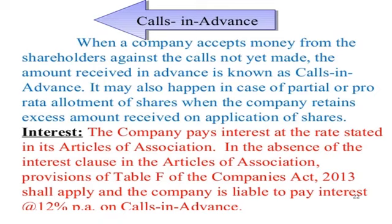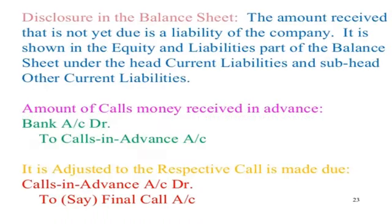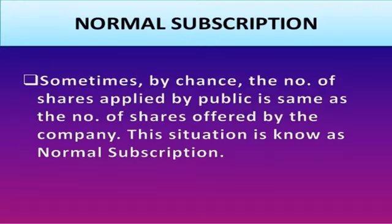Call in advance: when a company accepts money from the shareholders against a call not yet made, the amount received in advance is known as call in advance. It may also happen in case of proportionate or pro-rata allotment of shares when the company retains excess amount received on application of shares. Interest: the company pays interest at the rate stated in its articles of association. In the absence of an interest clause in the articles of association, provisions of Table F of the Companies Act 2013 shall apply and the company is liable to pay interest at 12% per annum on call in advance. The amount received that is not due is a liability of the company; it is shown in the equity and liabilities part of the balance sheet under the head current liabilities and subhead other current liabilities. Amount of call money received in advance will have the journal entry: bank account debit to call in advance account; it is adjusted when the respective call is made due — call in advance account debit to final call account.